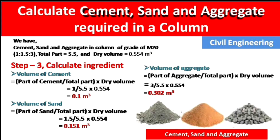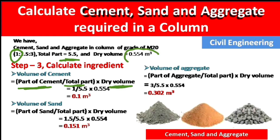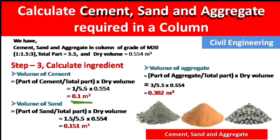Volume of cement = (part of cement / total parts) × dry volume = (1 / 5.5) × 0.554 = 0.1 m³. In the same way, volume of sand = (part of sand / total parts) × dry volume = (1.5 / 5.5) × 0.554.